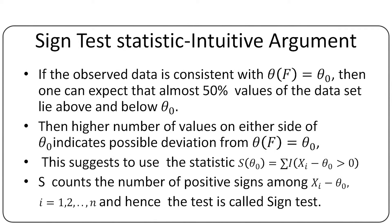We shall develop the sign test statistic using an intuitive argument. Suppose θ = θ₀, that is, the median is at θ₀. If the observed data is consistent with θ = θ₀, then one can expect that almost 50% of values lie above and below θ₀. Therefore, a higher number of values on either side of θ₀ indicates possible deviation from H₀. This suggests using the number of observations exceeding θ₀ as the test statistic: S(θ₀) = Σᵢ I(Xᵢ > θ₀). Since S counts the number of positive signs among Xᵢ − θ₀, the test based on S is called a sign test.